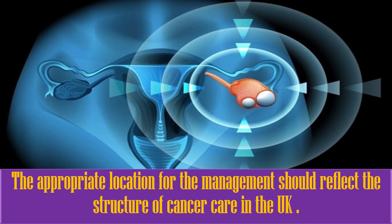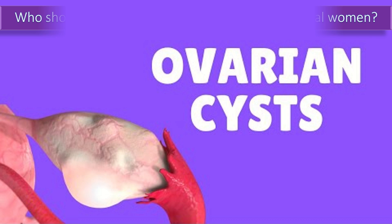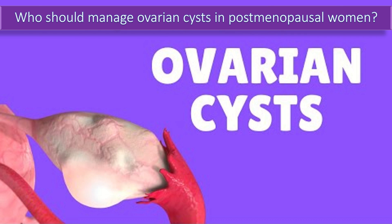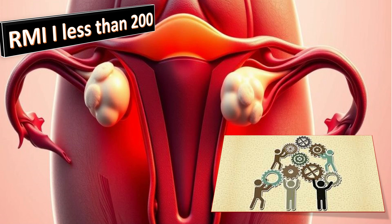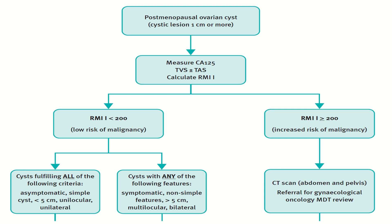Where and by whom should postmenopausal women with ovarian cysts be managed? The appropriate location for management should reflect the structure of cancer care in the UK. While a general gynecologist might manage women with low risk of malignancy (RMI 1 less than 200) in a general gynecology setting or cancer unit, women at high risk should be managed in a cancer center by a trained gynecological oncologist, unless MDT review does not support a high probability of ovarian malignancy.